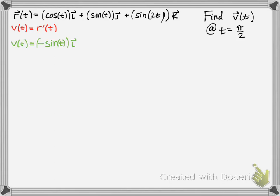For the i component, the derivative of cosine is negative sine. The derivative of sine t is cosine t. And the derivative of sine 2t, take the derivative of sine as cosine, and make sure you multiply by the 2. So that's 2 cosine 2t, and that's k.